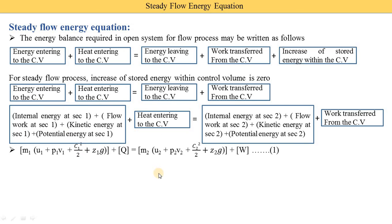Converting to equation form, all parameters depend on mass M. So: M times bracket U1 plus P1V1 plus C1²/2 plus Z1·g, plus heat Q entering the CV, equals M times bracket U2 plus P2V2 plus C2²/2 plus Z2·g, plus work transfer W from the control volume. This is equation number 1.